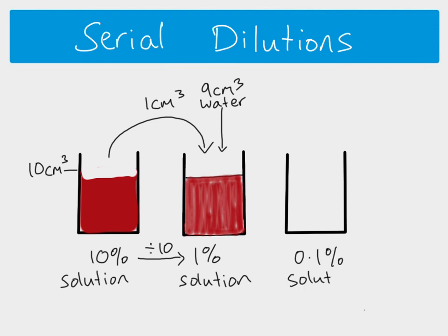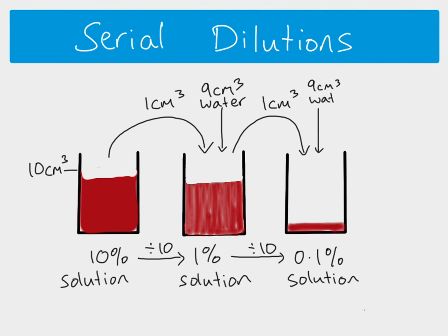If we then want to dilute by another factor of 10 — and remember, because it's a serial dilution it must be the same factor each time — we take 1 cm³ from our 1% solution and dilute it with 9 cm³ of water to make 10 cm³, giving us a 0.1% solution. We always take from the previous solution into the next: first into second, second into third, third into fourth — that's why it's called a serial dilution; it's a series of steps.